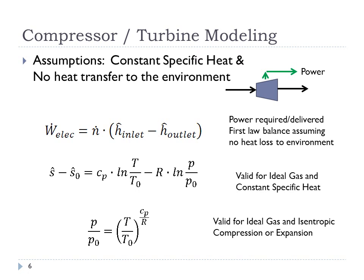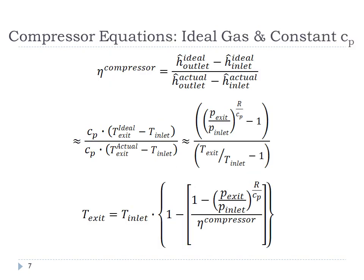For an ideal gas with constant specific heat and isentropic compression or expansion, setting entropy generation to zero gives: C_P times ln(T/T₀) equals R times ln(P/P₀). Rearranging, P/P₀ equals (T/T₀) raised to the power C_P over R. This is how we solve for the work in the isentropic case.